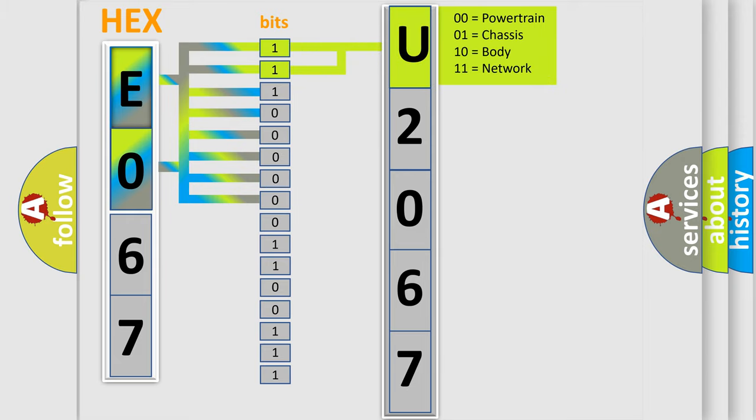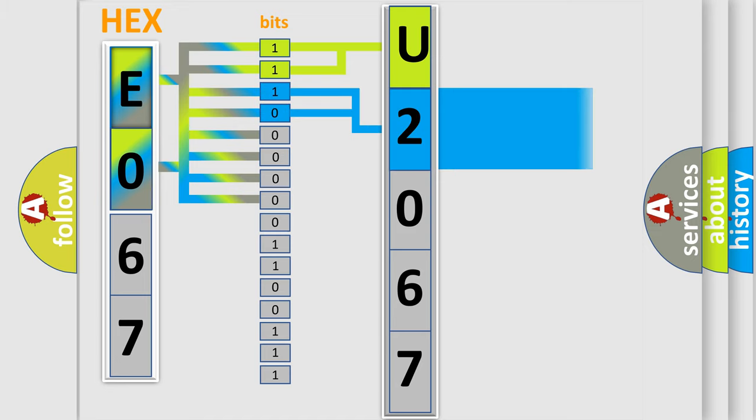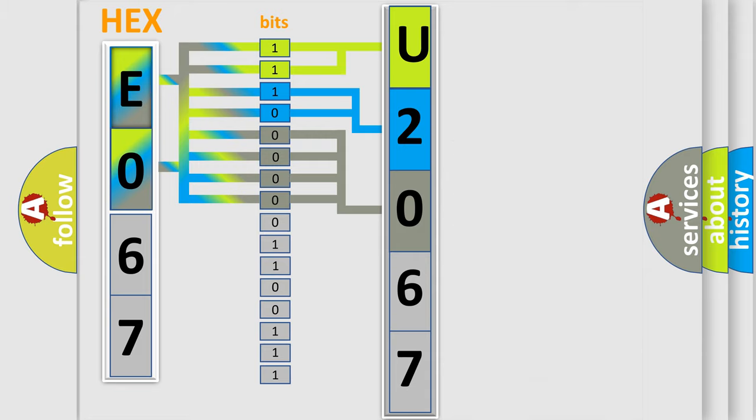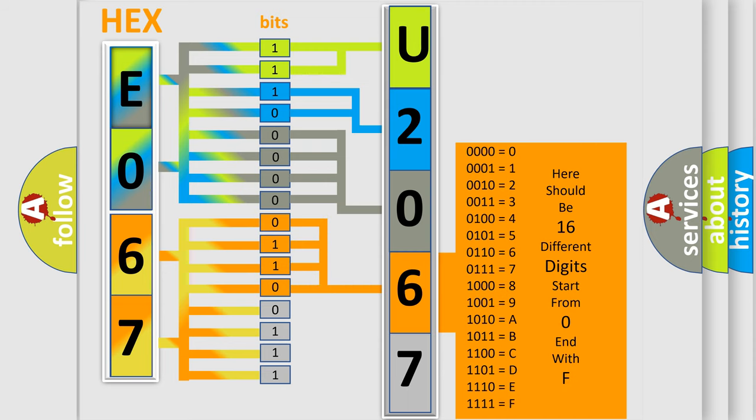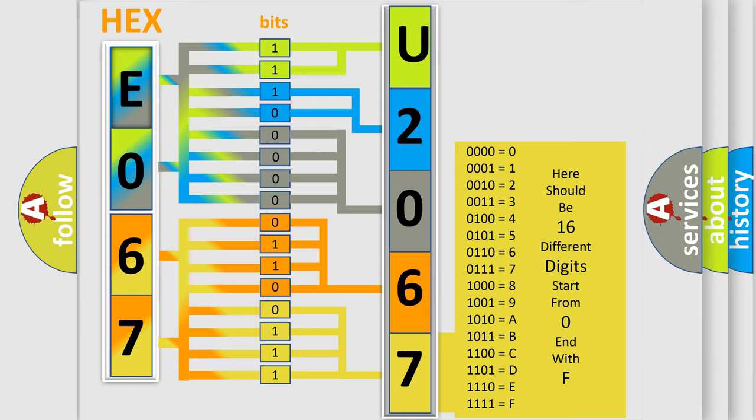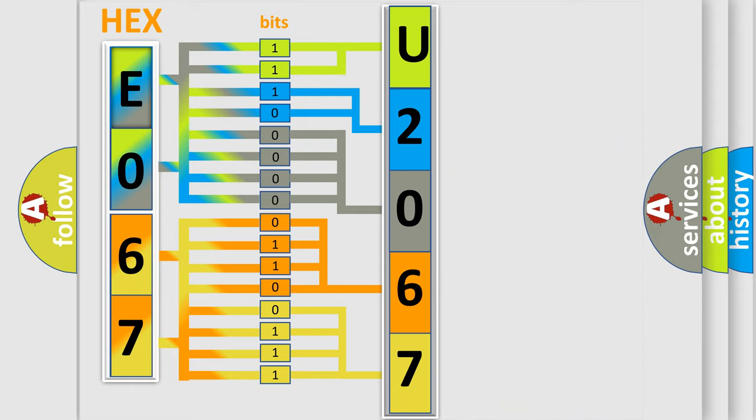By combining the first two bits, the basic character of the error code is expressed. The next two bits determine the second character. The last bit styles of the first byte define the third character of the code. The second byte is composed of a combination of eight bits. The first four bits determine the fourth character of the code, and the combination of the last four bits defines the fifth character. A single byte conceals 256 possible combinations.